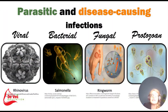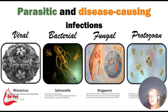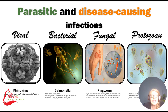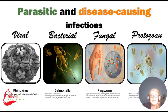The rhinovirus is known as the common cold — a viral infection affecting the upper respiratory tract. Salmonella bacteria cause foodborne illnesses, leading to symptoms like diarrhea, fever, and abdominal cramps. Ringworm fungi result in skin infections characterized by red, itchy, and circular rashes on the skin or scalp. Giardiasis, caused by the protozoa Giardia, is a waterborne infection leading to gastrointestinal symptoms such as diarrhea and abdominal cramps.